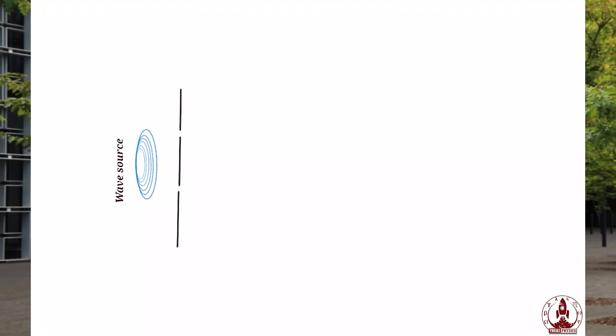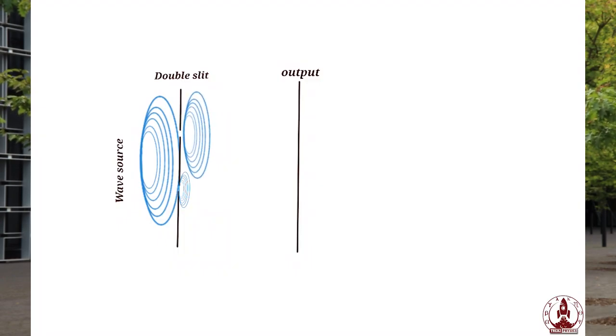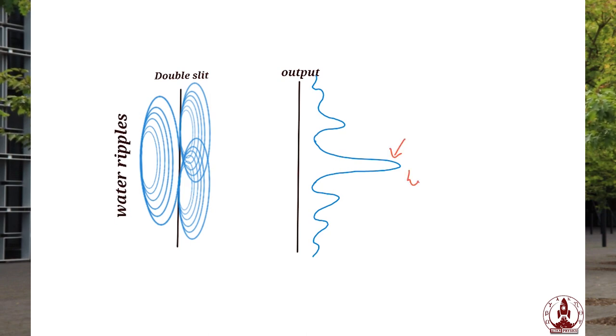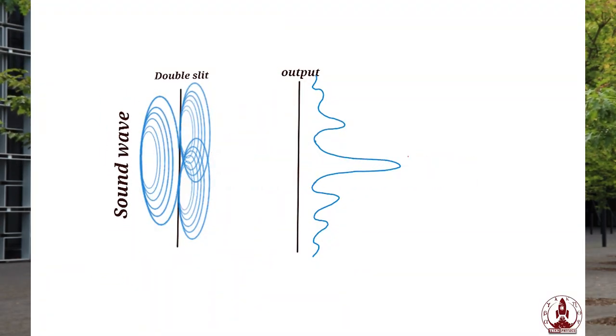The double slit experiment is used to visualize constructive and destructive interference. A screen with only two slits is placed in front of the wave, and the interference pattern is measured on the other side. For classical waves like ripples on water, the pattern alternates between very large ripples and completely flat regions. For sound waves, it alternates between regions of very loud sound and very quiet sound.